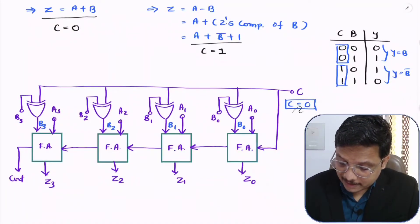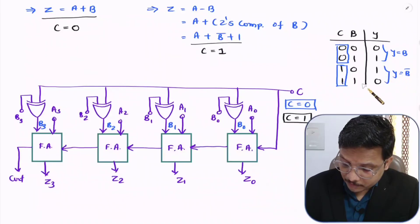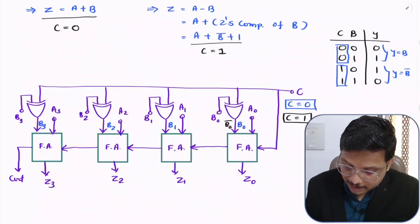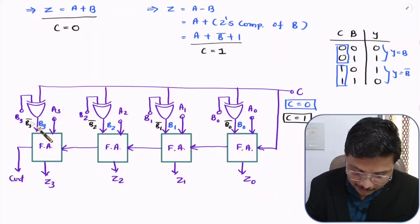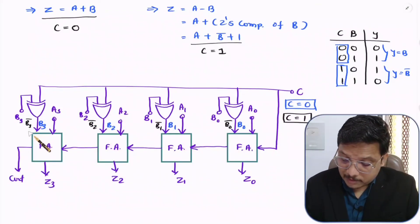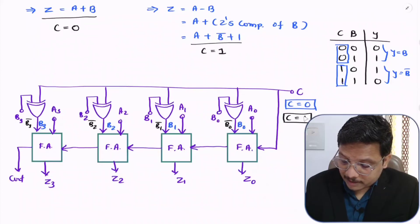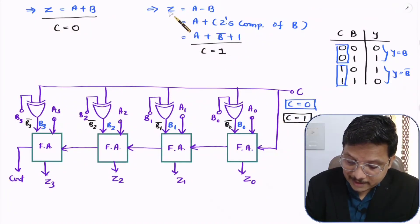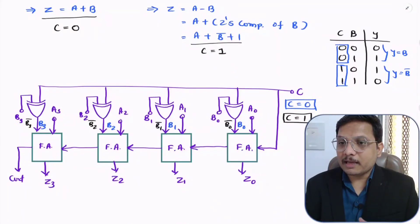But what will happen when C equals 1? As per the XOR gate property, when C is 1, the output Y equals B-bar. So the XOR gate outputs are B0-bar, B1-bar, B2-bar, and B3-bar. At that time the full adder output will be A plus B-bar plus carry equals 1. So Z equals A plus B-bar plus 1, which means we are performing subtraction operation.